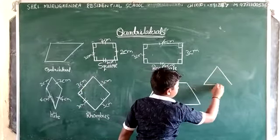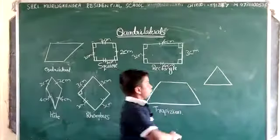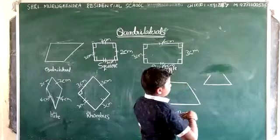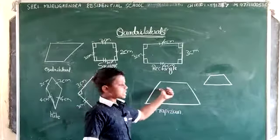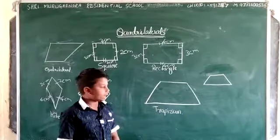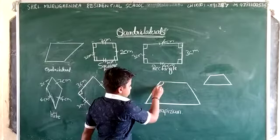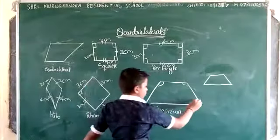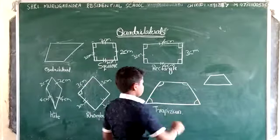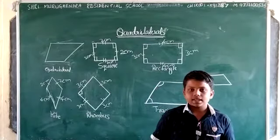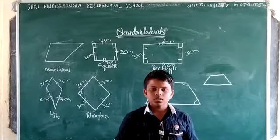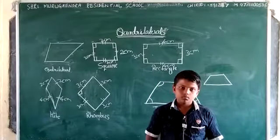And now rhombus. Rhombus is a figure where all the sides are equal. If it is three centimeters, all the sides will be three centimeters. And the angle should be 90 degrees. So rhombus means nothing but, here is square. If we rotate this like this, we get rhombus. So this is a figure like square only.